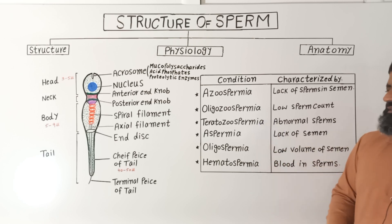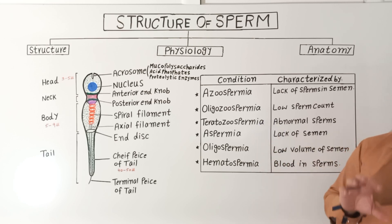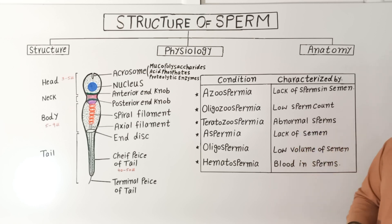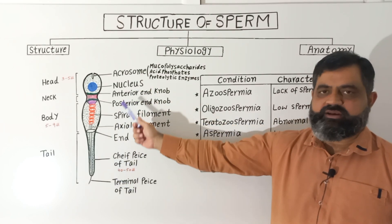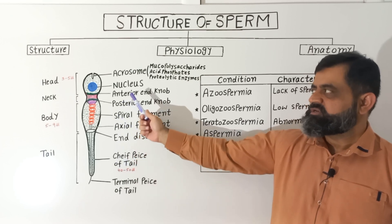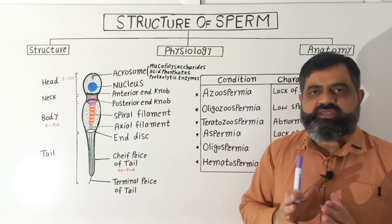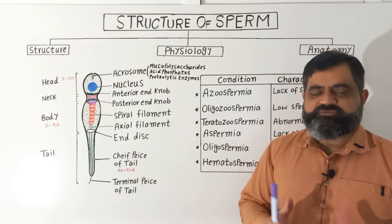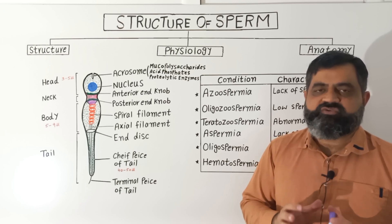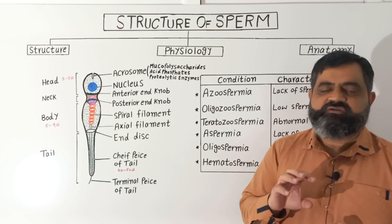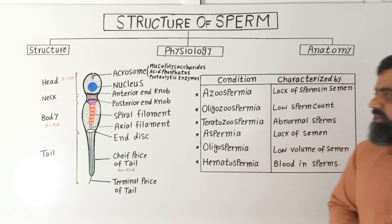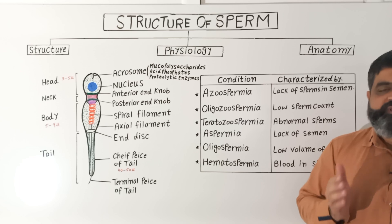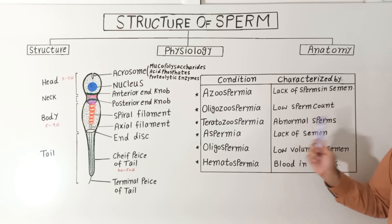The third condition is known as teratozoospermia, in which the morphology of the sperm changes and the sperms become abnormal. As you can see in the diagram, the sperm contains different regions — head, neck, body, and tail — and there can be any kind of abnormality in these parts, leading to infertility. Certain teratogens can cause deformities in the shape of the sperms, which can also lead to infertility.